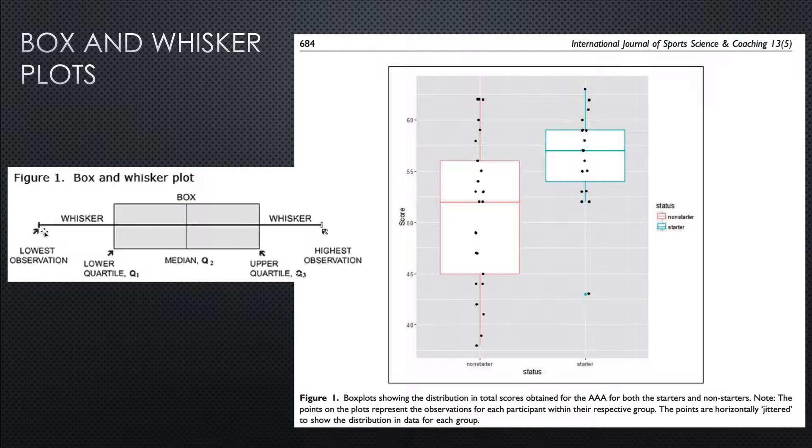The bottom part of the whisker shows the lowest score. The top of the whisker shows the highest score. So when I look at this graph, I can see where the scores fell from top to bottom. I can see that the lowest was just below 40, the highest was just below 65. So that tells us the highest and the lowest score.